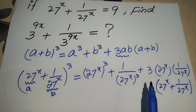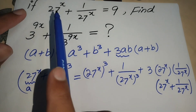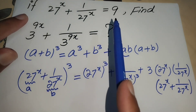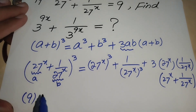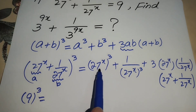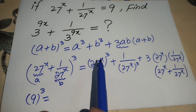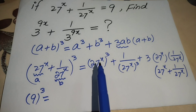We know that 27^x + 1/27^x = 9, so we substitute here and we get 9³ on the left side. Then we expand the term 27^x whole power 3.